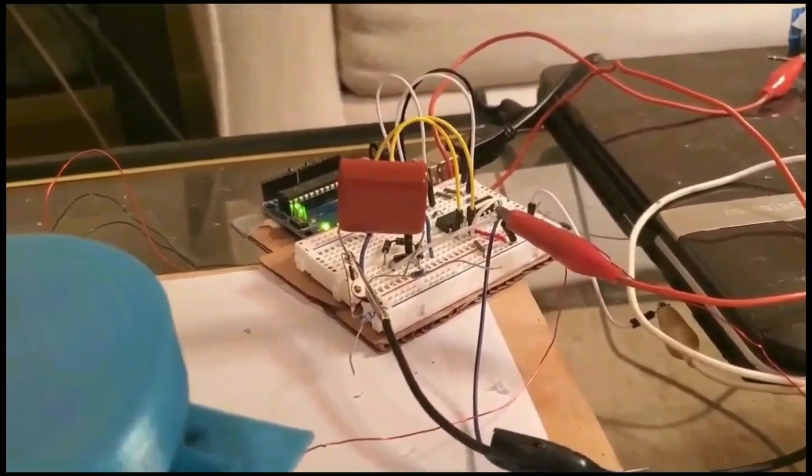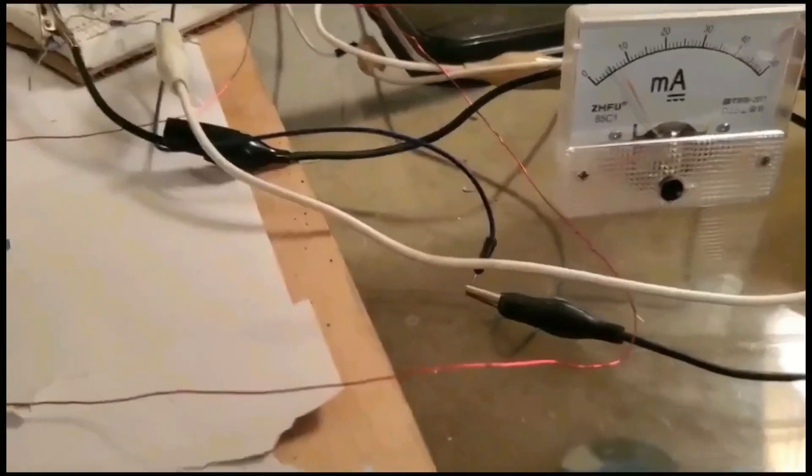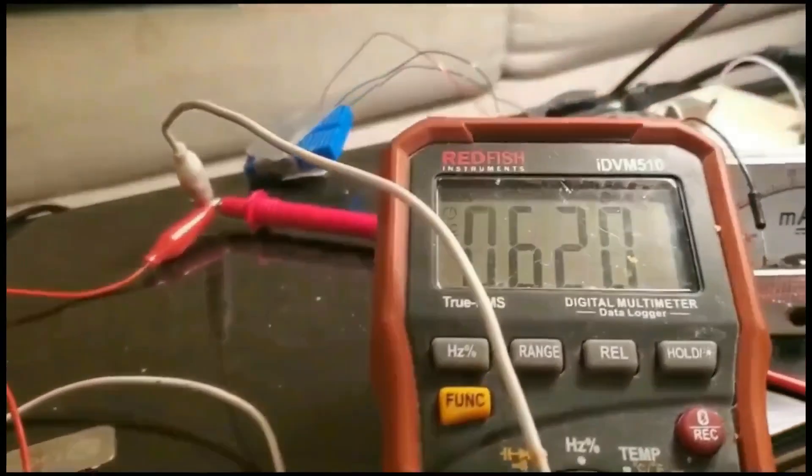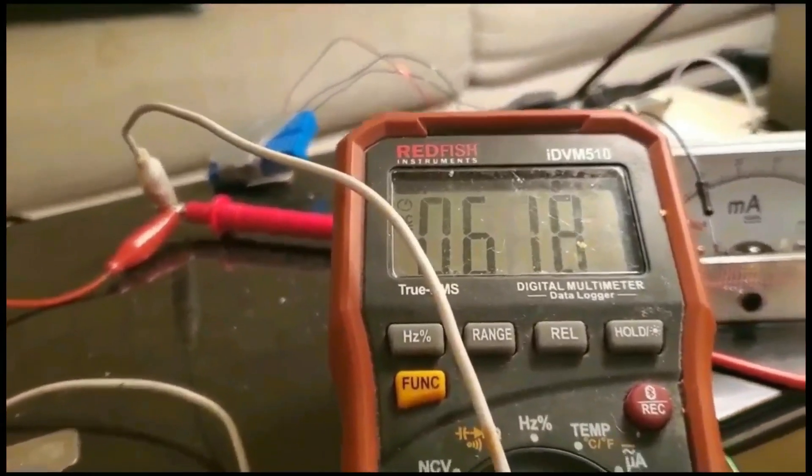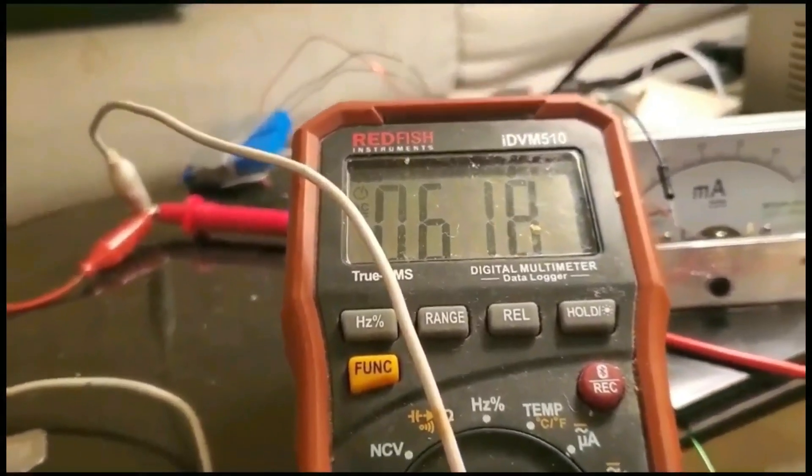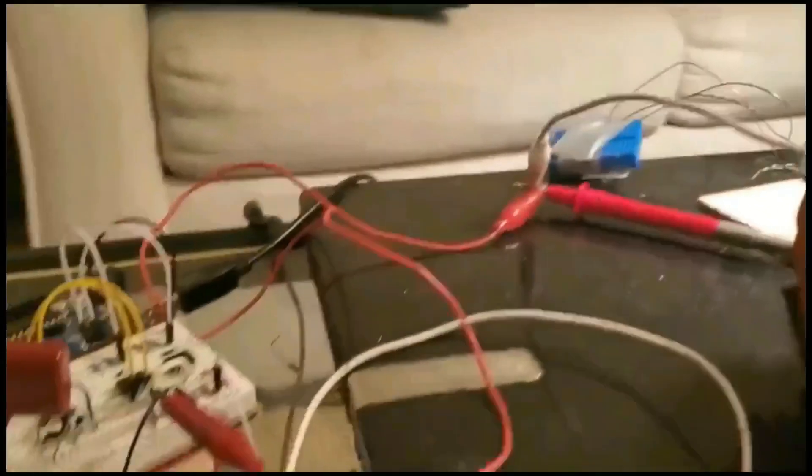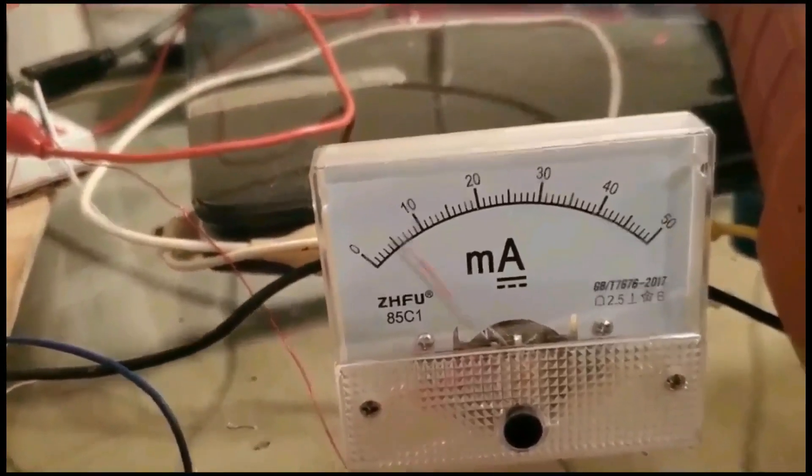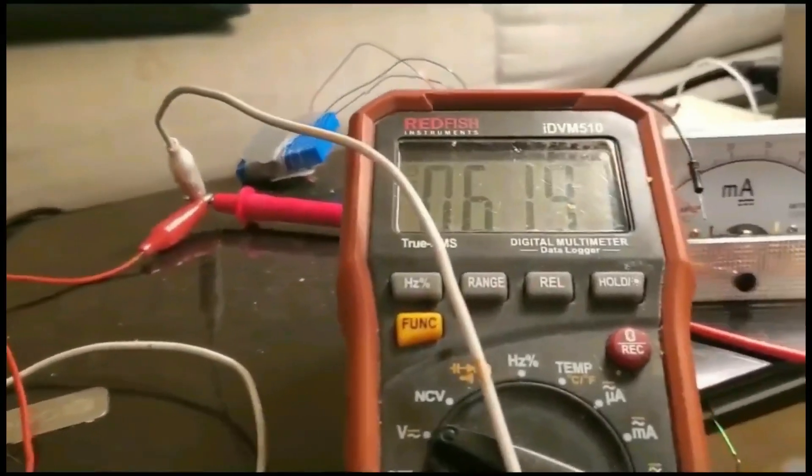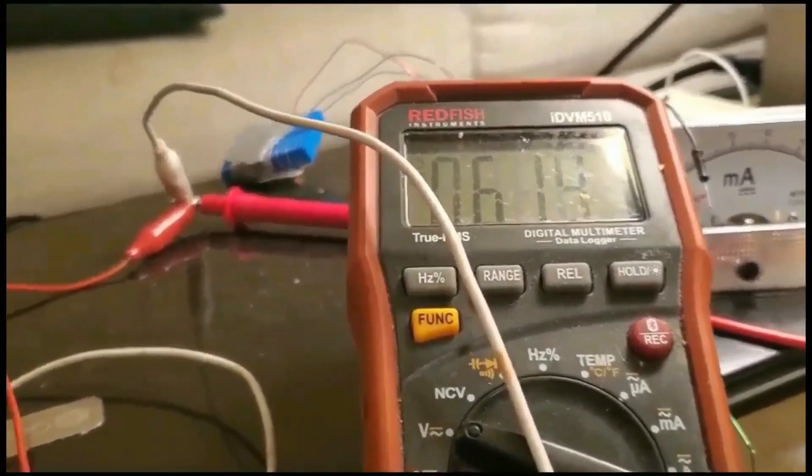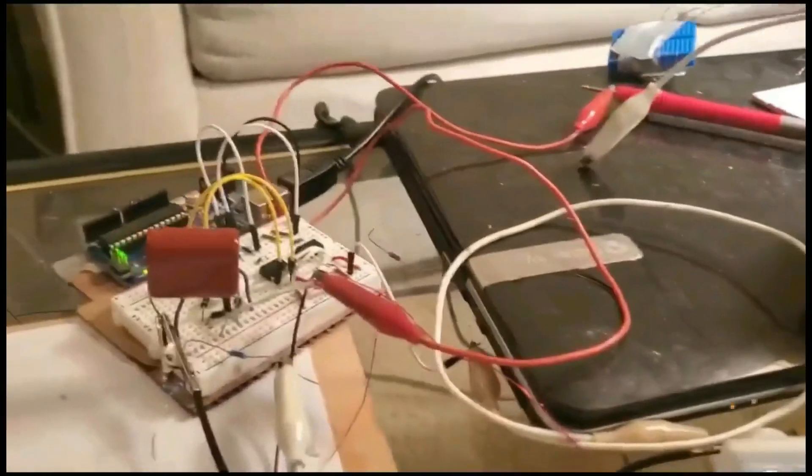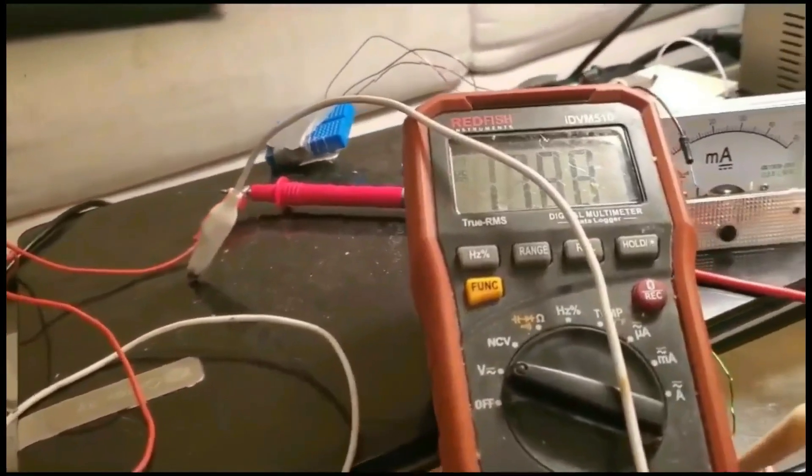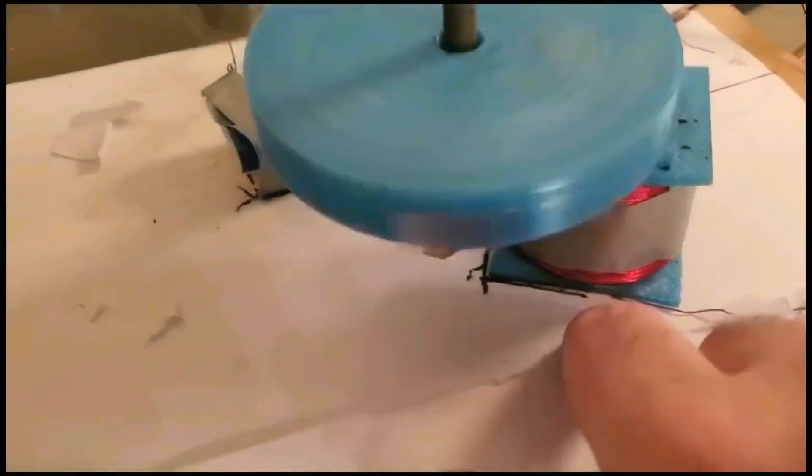Let me see how high I can get the voltage. Here we're drawing 10 milliamps, 147 volts climbing. Three volts input, 150 volts out. You can hear the rotor starting to slow down though, so it'll just come to a stop. I don't think we can have it there.